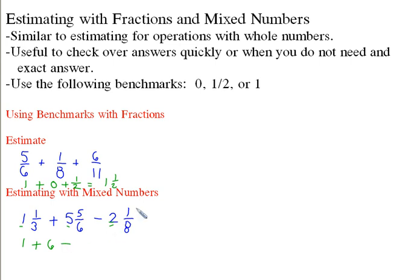Now we subtract 2 and 1/8. That 1/8 is close to 0 if we're estimating it, and so this is going to be subtract 2. All we do is 1 plus 6 minus 2, so that's going to be a total of 5.